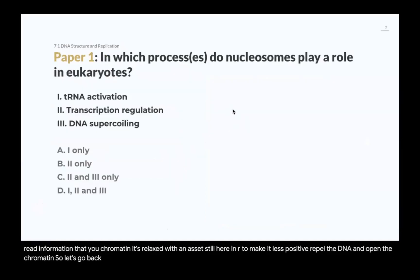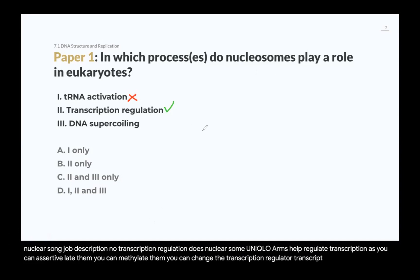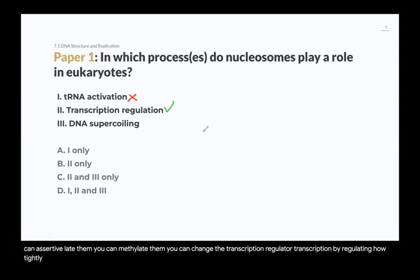So let's go back to our question. In which processes do nucleosomes play a role in eukaryotes? tRNA activation, is it part of a nucleosome job description? No. Transcription regulation. Do nucleosomes help regulate transcription? Yes, you can acetylate them. You can methylate them. You can change the transcription, regulate transcription, by regulating how tightly wrapped the DNA is around the histones. And also, this is part of the nucleosome role to supercoil DNA. So our answers here are 2 and 3 only.